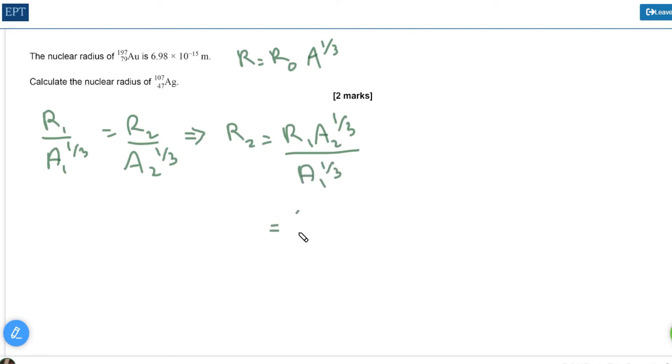If you're bunging in the numbers to that, 6.98 times 10 to the minus 15 times 107 cube rooted, all divided by 197 cube root, you get the answer which is of course 5.7 times 10 to the minus 15 meters.